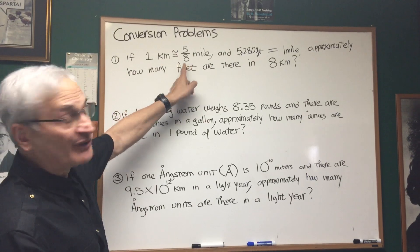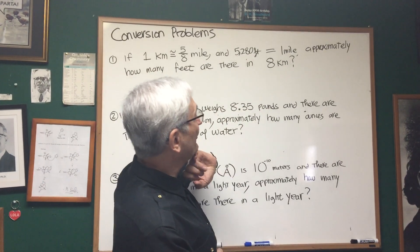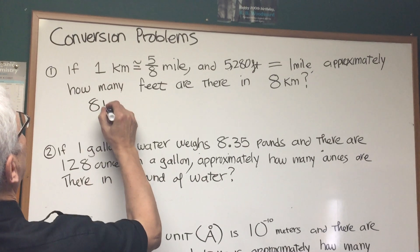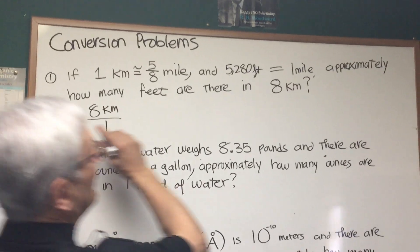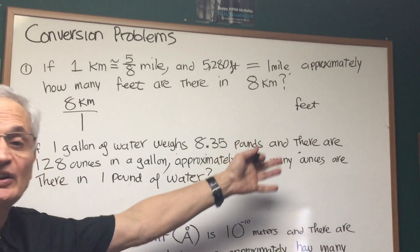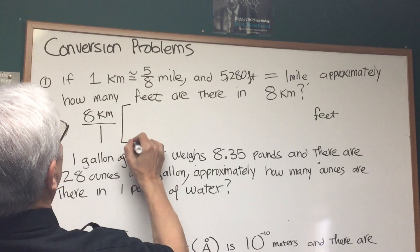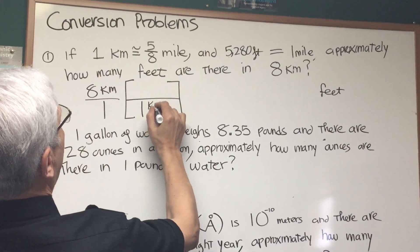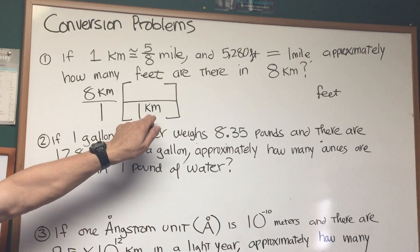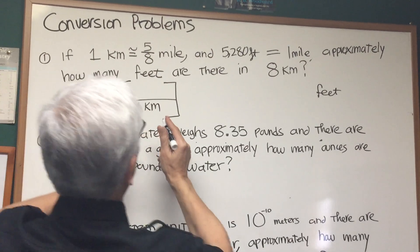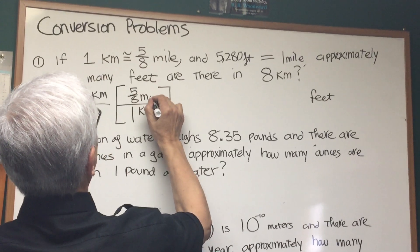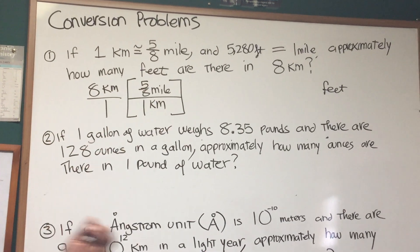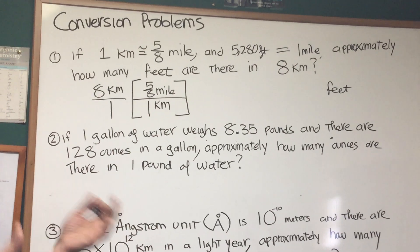If one kilometer is approximately five-eighths of a mile and one mile is 5,280 feet, approximately how many feet are there in eight kilometers? We want to start with eight kilometers and make a fraction out of that, and we want to wind up with feet — that's our objective, the final units of measurement will be feet. Our first conversion factor: one kilometer is approximately five-eighths of a mile, so we put one kilometer in the denominator to cancel the kilometer in the numerator.